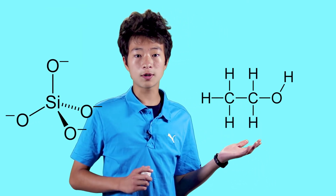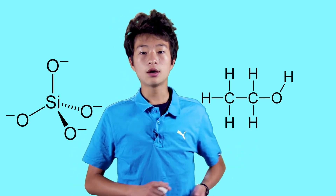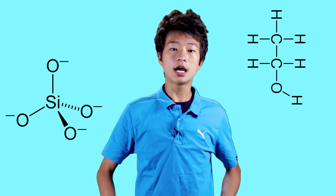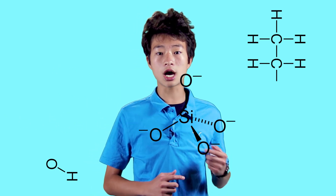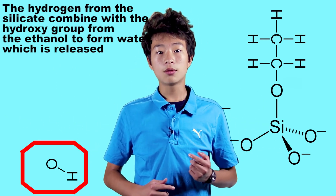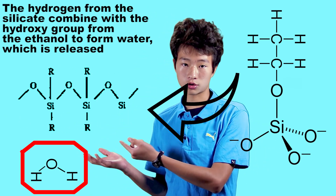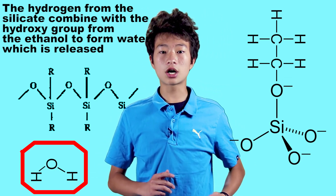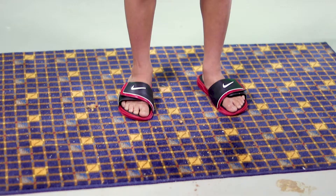The ethyl alcohol molecule is very simple and has just two carbon atoms. When sodium silicate and ethyl alcohol are put together, the ethanol molecules start to replace the oxygen atoms in the silicate ion with the ethyl groups, shown here as the R groups. The attraction between the different R groups can cause them to cross-link to form a huge polymer, as seen here.